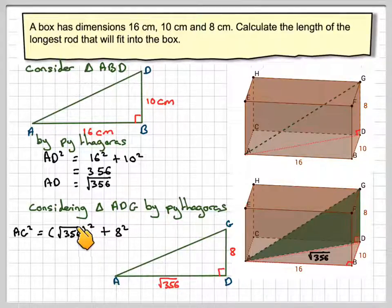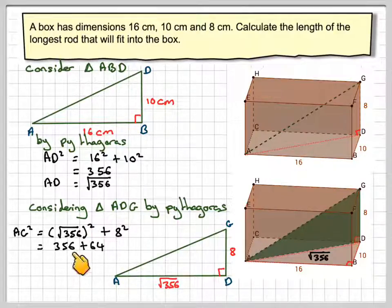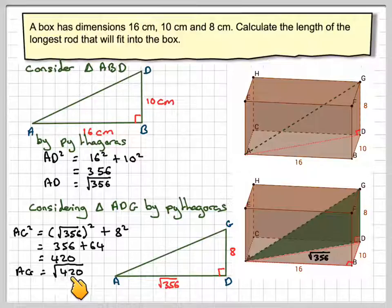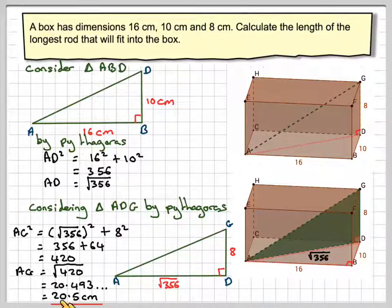So this squared sign and the square root sign cancel each other out. So you're just left with 356. And 8 squared is 64. That gives you 420. And therefore AG will be the square root of 420. And on our calculator, that's going to be 20.493. And to two significant figures, that's 20.5 centimetres.